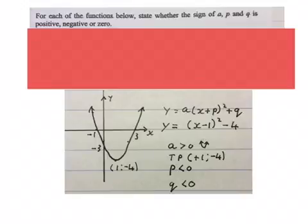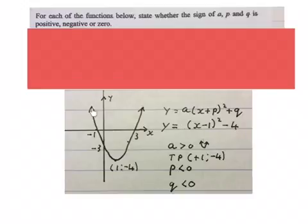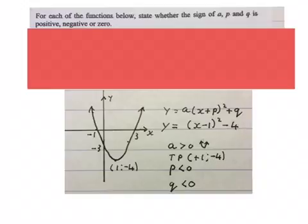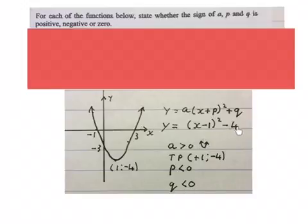I'm going to use an example to let you get the feeling. I took an equation and sketched it — it's the same as the turning point formula we're going to use. My turning point is plus 1 and minus 4. There's a plus in front, so it's a happy parabola, meaning A is bigger than zero. The turning point is plus 1 and minus 4. P is smaller than zero, although this is a plus 1 over here — because if the minus comes out of the bracket it becomes a positive. And Q is smaller than zero, because that is a minus 4 at the back.